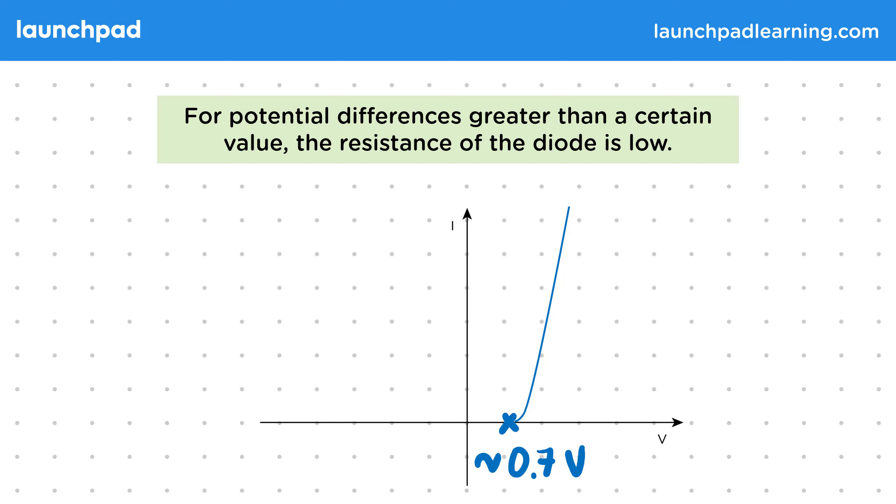Since it's above the horizontal axis, it tells us that we get positive values for the current flowing through the diode. In other words, a current can flow for these potential differences.